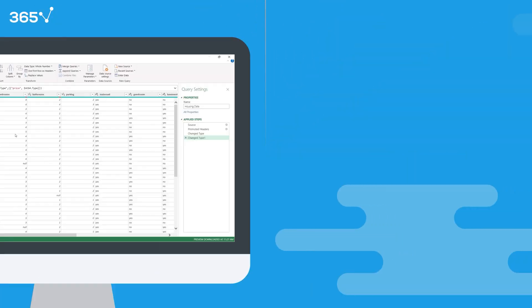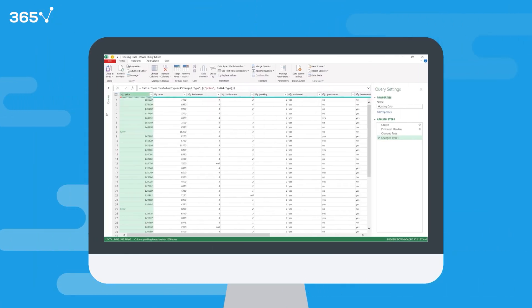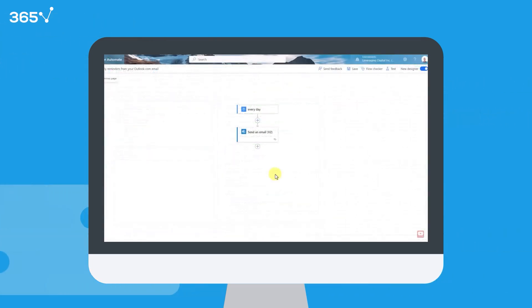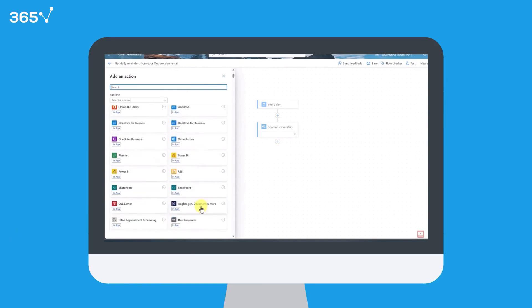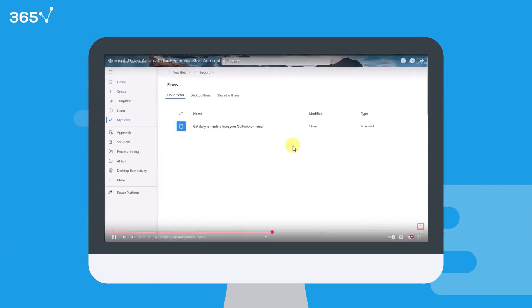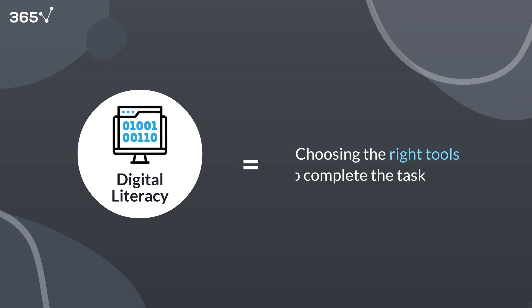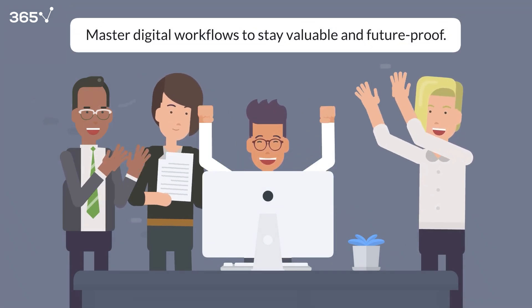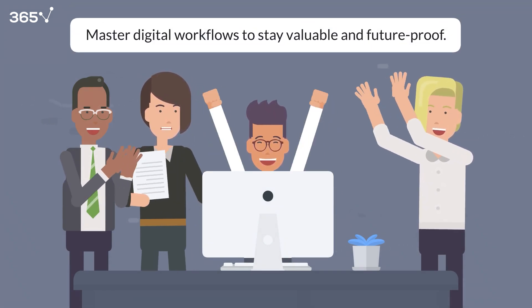For example, instead of manually copying and cleaning data from multiple reports, Power Query can handle it all automatically. Or you can set up a macro that formats your month-end reporting pack in seconds. Need to collect budget inputs from 10 departments? A Power Automate flow can handle it without a single email. Digital literacy isn't about being a developer. It's about understanding what's possible and choosing the right tools to get the job done. The more fluent you are with digital workflows, the more valuable and future-proof you become.